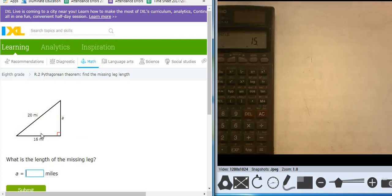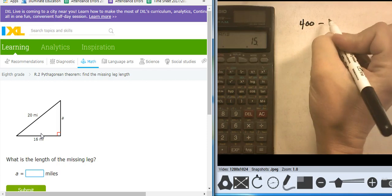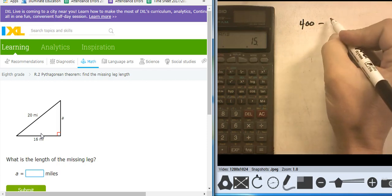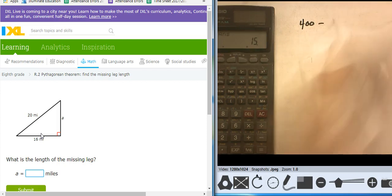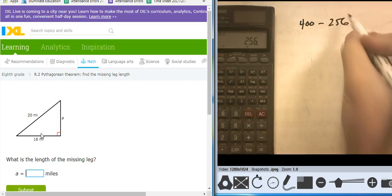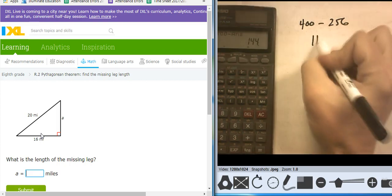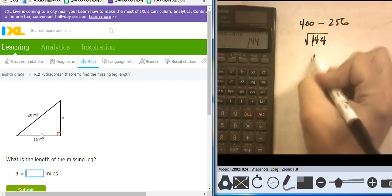This is going to be 20 squared, which is 400, minus 16 squared, which is 256. I'm going to check that, 256. So I subtract them, takes me to 144. Take the square root of that, takes me to a 12.